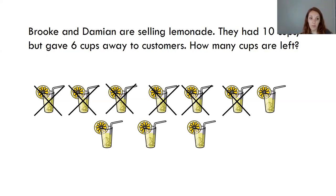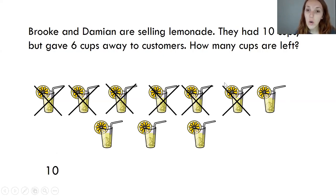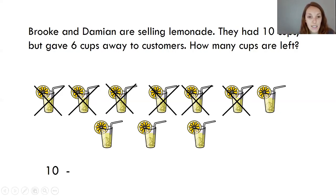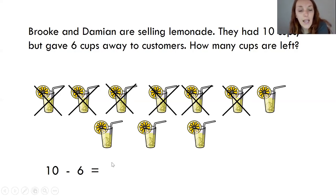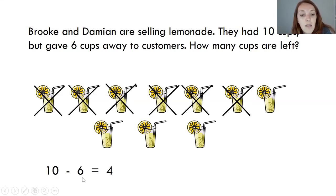Now I've drawn my picture to find my answer. I know my answer is four, but now it's really important to come up with an equation or number sentence that matches my story. How many cups of lemonade did we start with in the beginning of the story? Ten. And then we took away six cups — six cups were taken away. Do we remember what sign means take away? Plus means put together and minus means take away. So we're going to use minus. Ten minus six — how many did I take away? Six. So I had ten, and then we gave away six. And that equals — how many cups were left? Four. Ten minus six equals four.